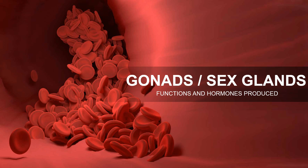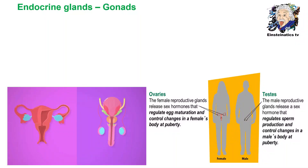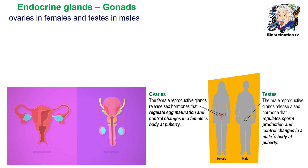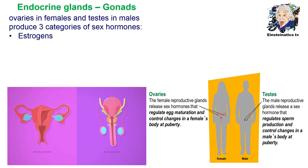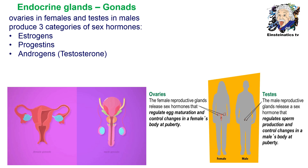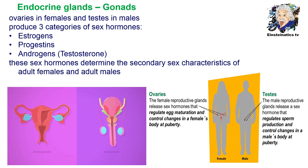Now that we are familiar with the different types of endocrine glands, we are going to look at the different types of sex glands, collectively known as gonads. Gonads refer to the ovaries in females and the testes in males. These glands produce three categories of sex hormones: estrogen, the progestins or progesterone, and the androgens or testosterone. These sex hormones determine the secondary sexual characteristics of adult females and adult males.